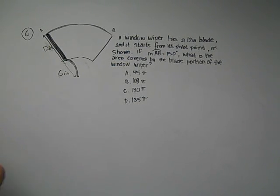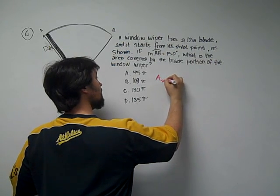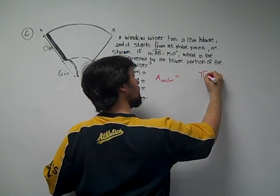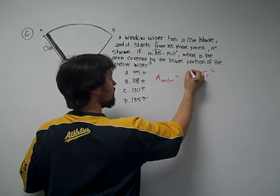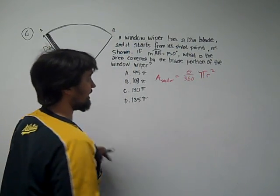All right, so we start with the area of a sector. The entire thing would be pi r squared and whatever slice we're taking out of it, that's the fraction we want to take out of 360.